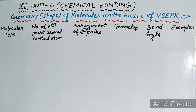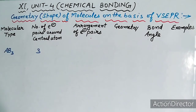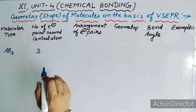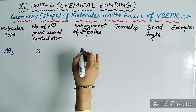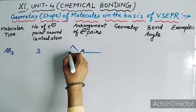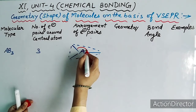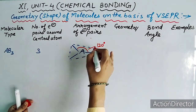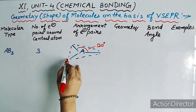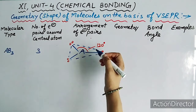अब second molecular type AB3 discuss करते हैं — एक central atom और उसकी surrounding में 3 bond pairs of electrons। Number of electron pairs = 3. Arrangement में central atom A की surrounding में तीनों electron pairs को इस तरह arrange करेंगे कि इनके बीच का maximum angle of separation रहे — यह nearly 120 degree होता है।